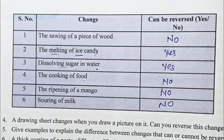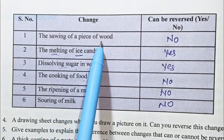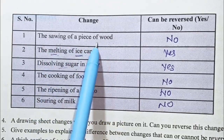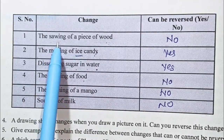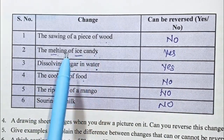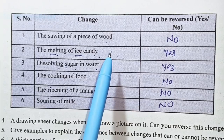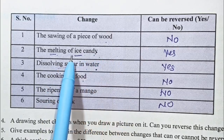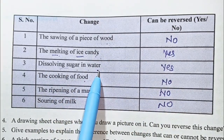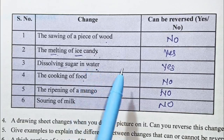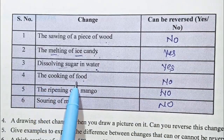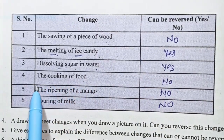Application 4, number 1: The swing of a piece of wood — this change can be reversed. This change will make a new piece of wood. Dissolving sugar in water — mix it with water. Cooking of food.